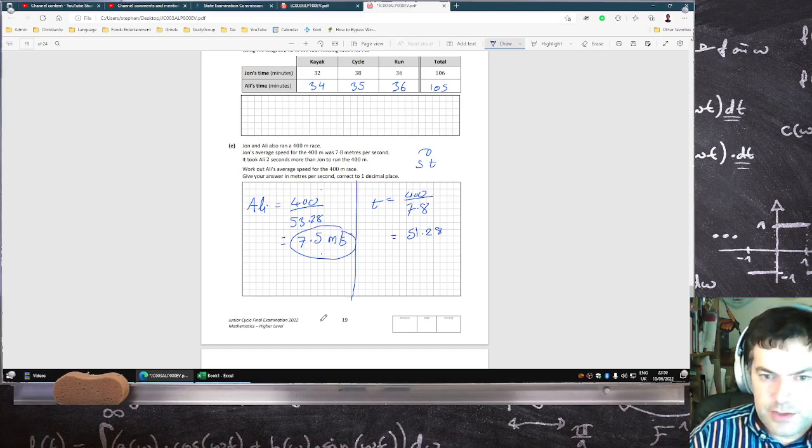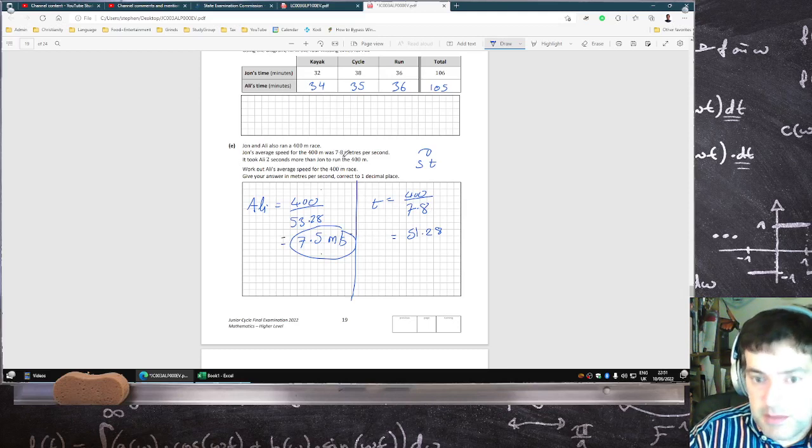He should, if he's taking two seconds more, that means he's running a bit slower. So it should be smaller than 7.8. So I think that's right.